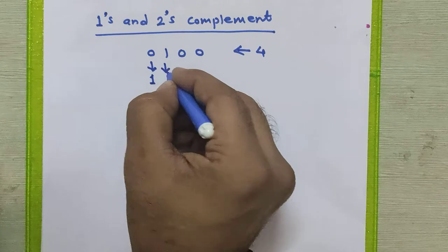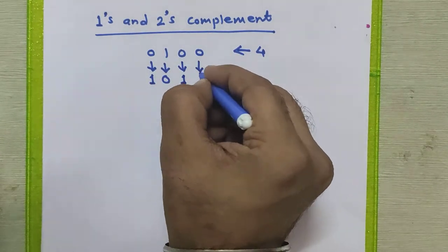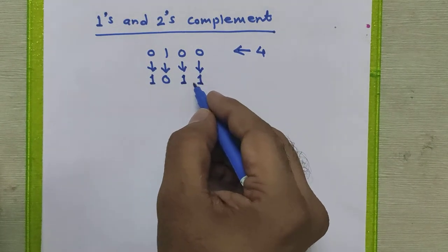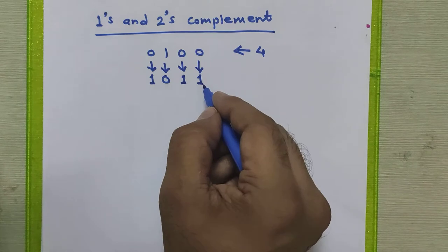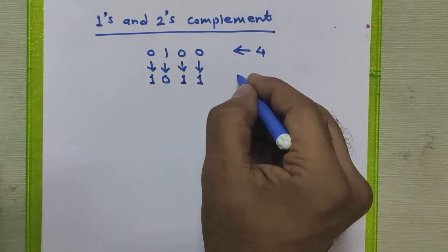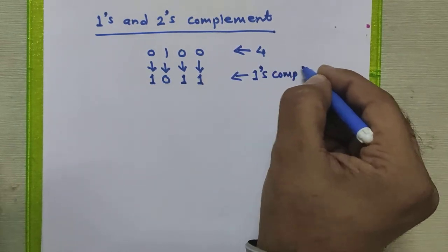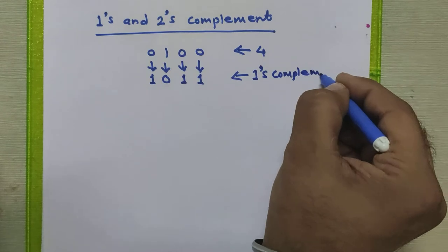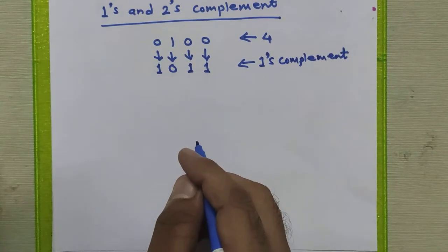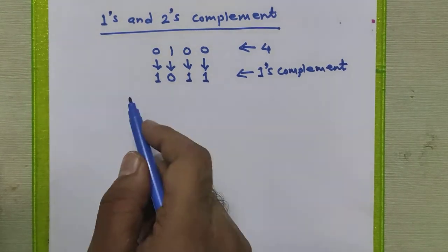So this 1 gets replaced by 0, this 0 is replaced by 1, this 0 is replaced by 1. So 1 0 1 1 is the ones complement of the given binary number. Now the question is how to find the twos complement of this number.